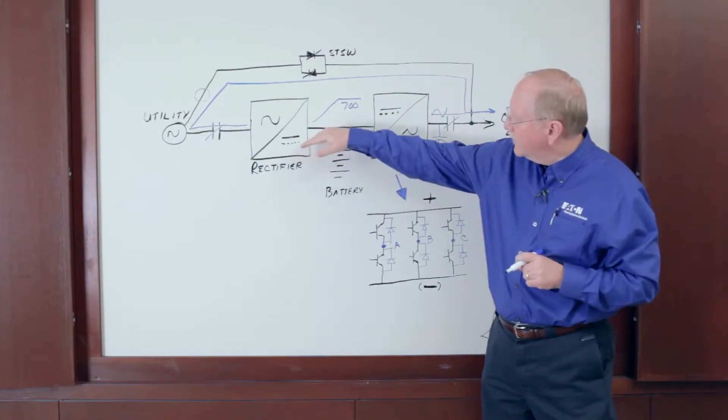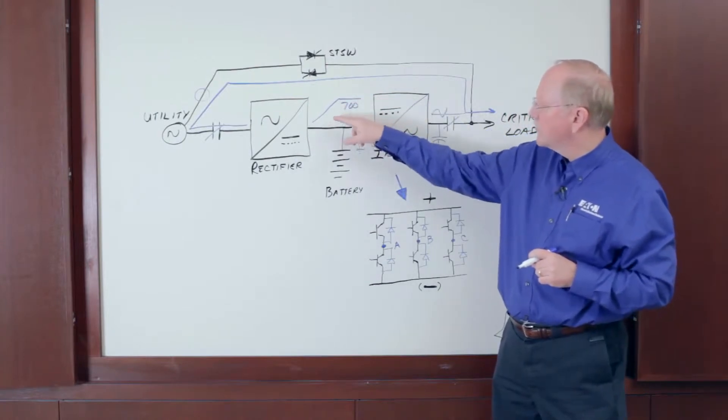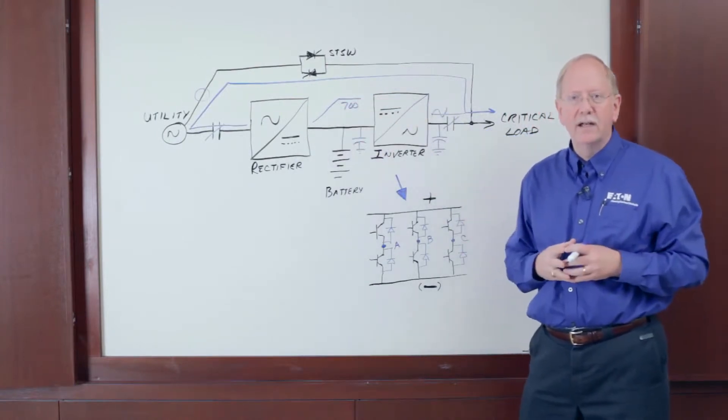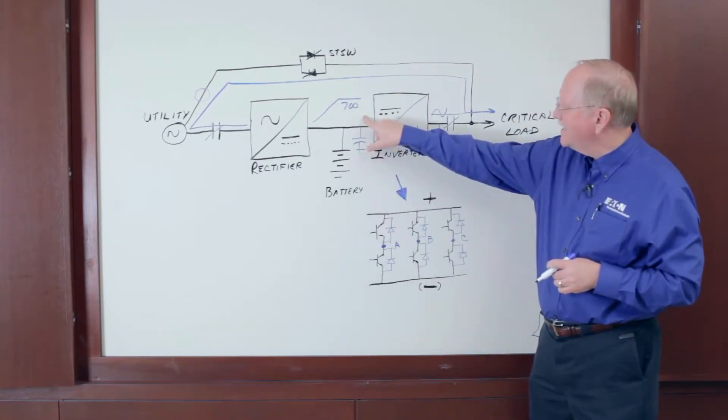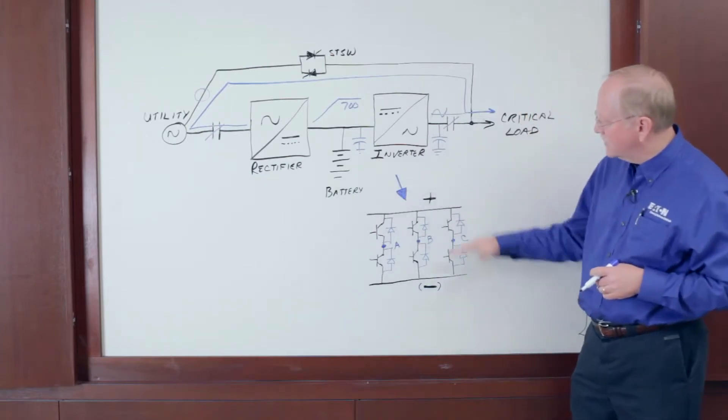But what about this rectifier that has to charge these capacitors over 30 seconds from zero to 700 volts? How do we do that? Well, if we look at the schematic of the inverter, the inverter's job is to take DC and create AC. Schematically, it looks like this.